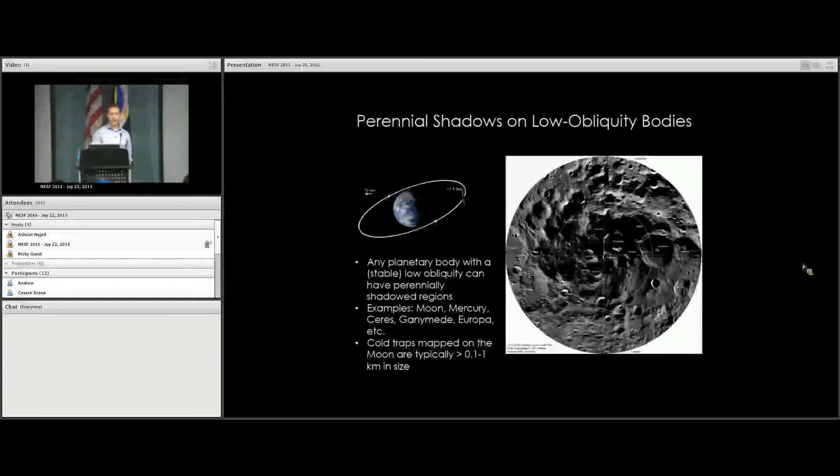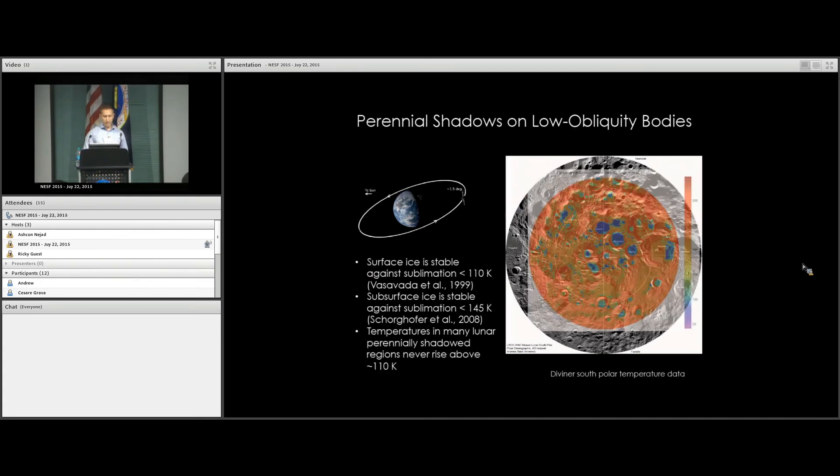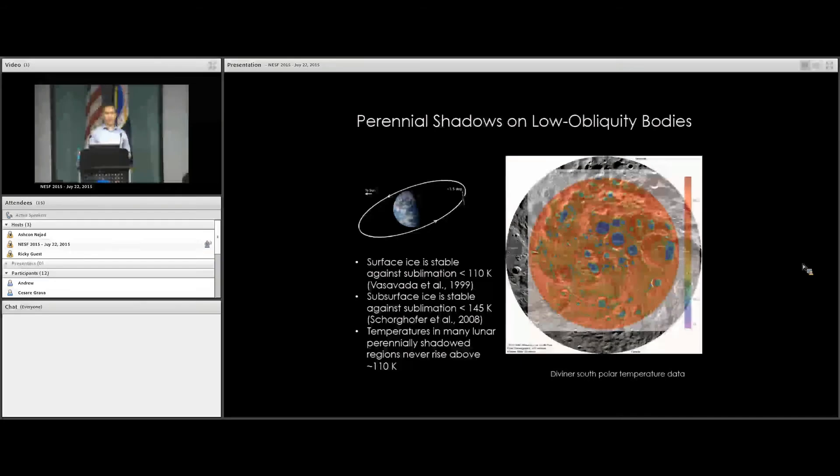Any planetary body with a stable low obliquity can have perennially shadowed regions. The PSRs we normally think about are those mapped at scales accessible to orbiters, typically maybe hundreds of meters up to many tens or hundreds of kilometers in some cases on the moon.